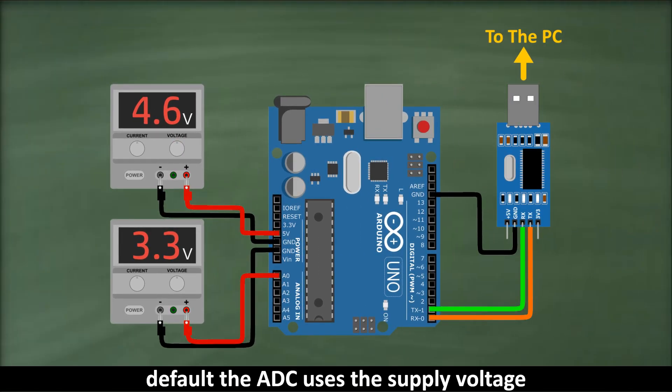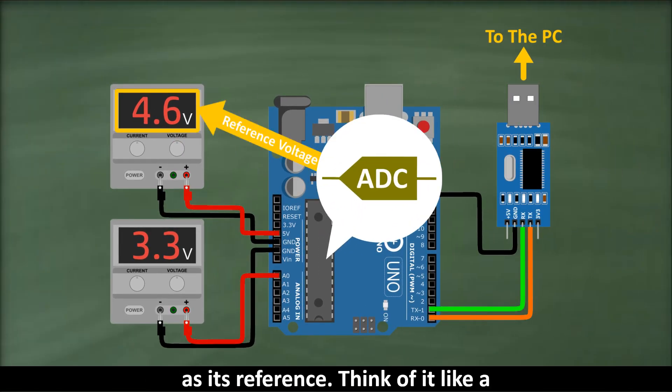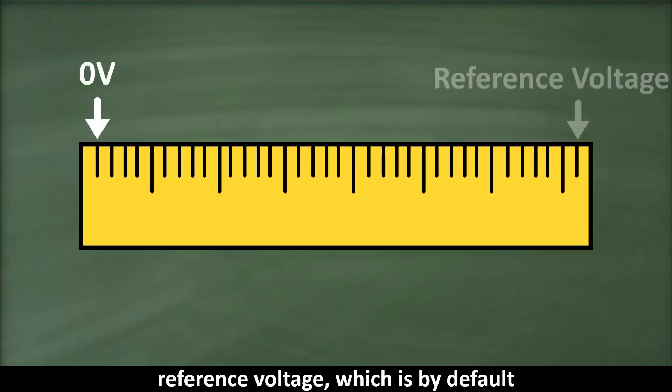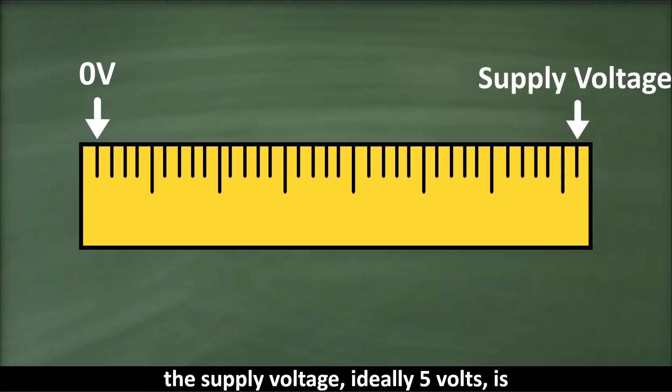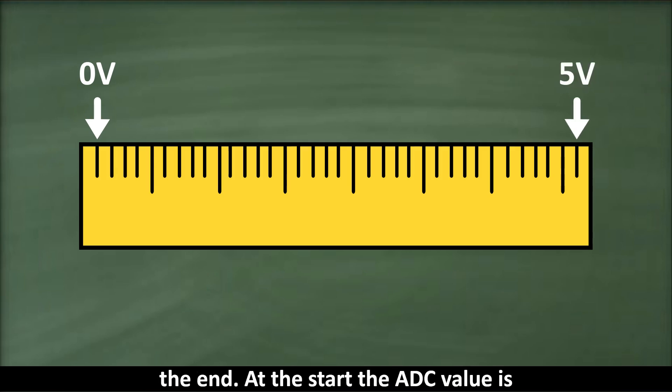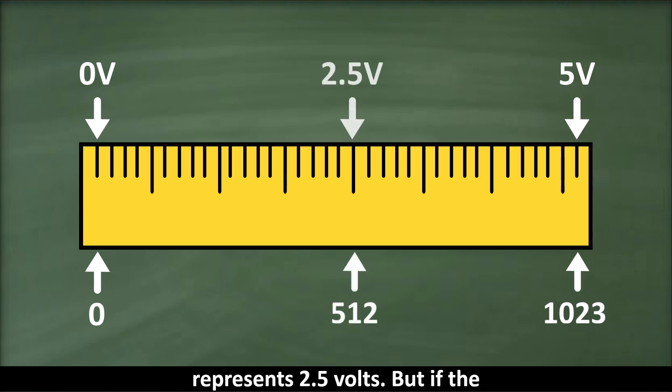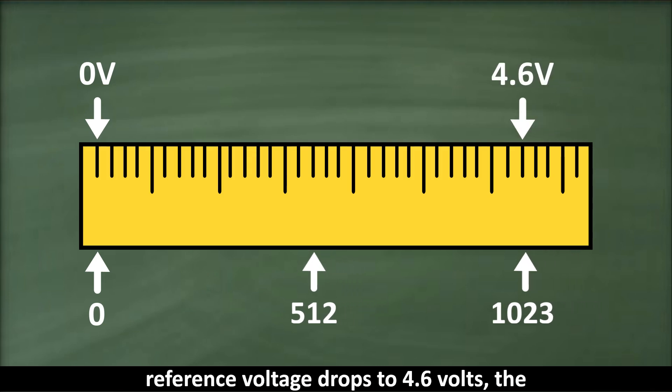This is because, by default, the ADC uses the supply voltage as its reference. Think of it like a ruler. 0 volts is the start, and the reference voltage, which is by default the supply voltage, ideally 5 volts is the end. At the start, the ADC value is 0, and at the end, its value is 1,023. The midpoint corresponds to about 512, which represents 2.5 volts. But if the reference voltage drops to 4.6 volts, the entire scale shifts. Now the midpoint value of 512 corresponds to only 2.3 volts, introducing errors into our measurements.